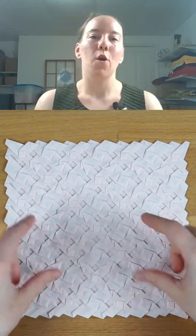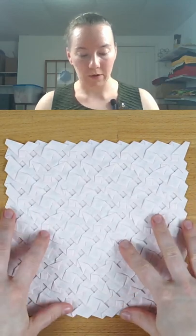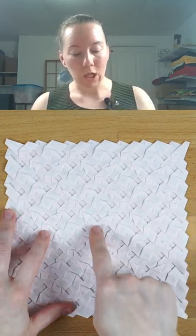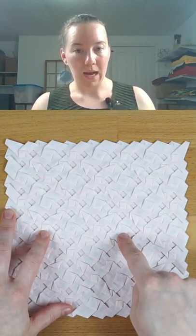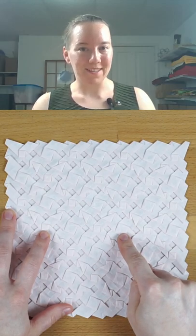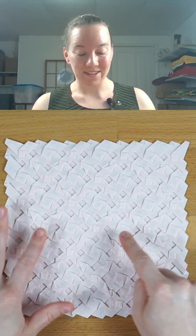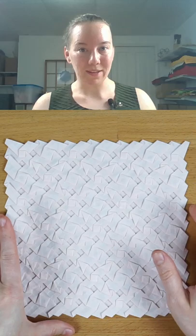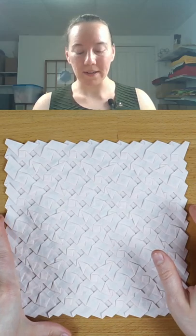So in this tessellation we have this really interesting structure where we have closed, hybrid, and open square twists all on the front side, just like my square knots weave that I taught for Origami USA last year.